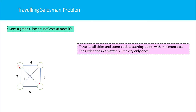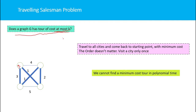If you consider this graph, this is the minimum cost tour — from s you go to this vertex, and like this is the minimum cost tour of the graph. Our problem is to find out whether graph G has a tour of cost at most K. We cannot find this minimum cost tour in polynomial time.